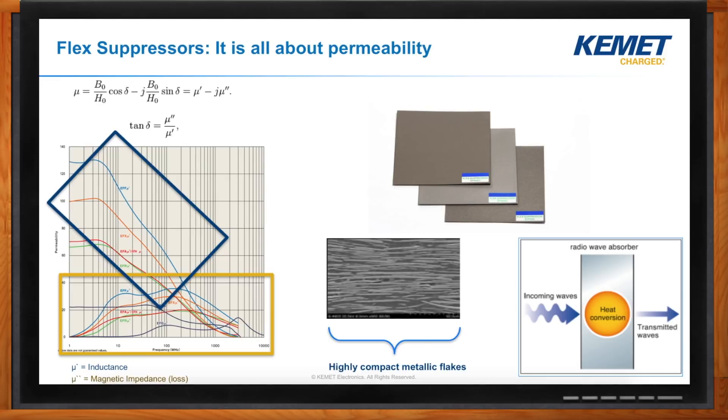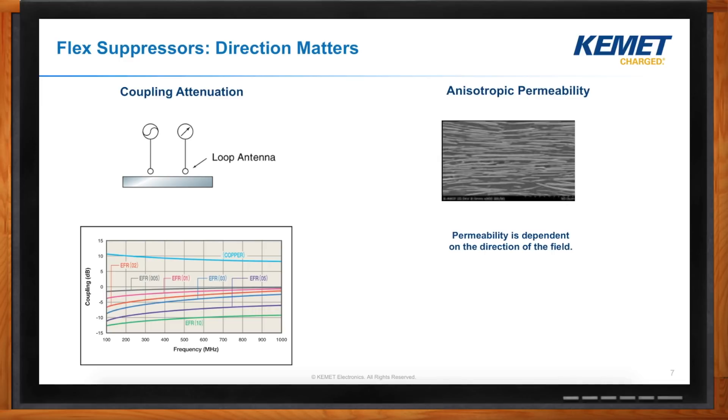So, Wilmer, what are some of the challenges or design considerations here? So, one of the important things to note when it comes to flex suppressors is that the direction matters. So, an incoming field that goes parallel to the flex suppressor material has actually much less permeability than a field going perpendicular. So, that so-called anisotropic permeability is the result of the fact that the permeability when the field is parallel is greater than the permeability when the field is perpendicular.